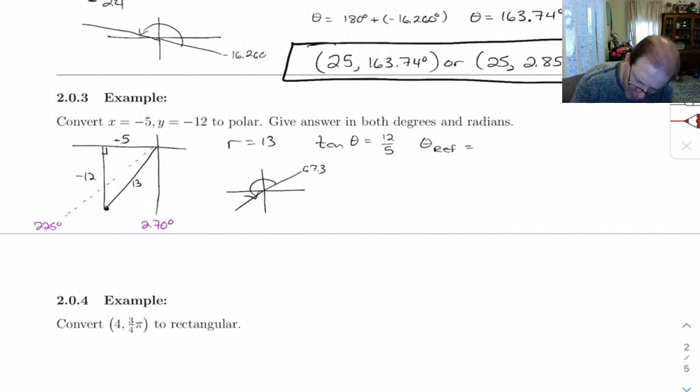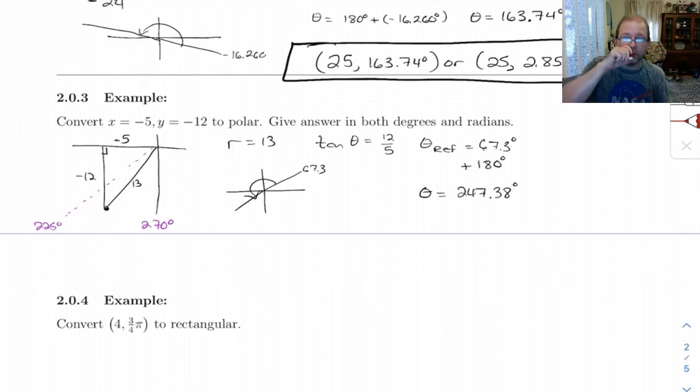But to get over here, we have to add 180 to it. So 67.3, add 180, gives me 247.38.